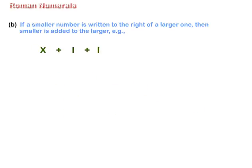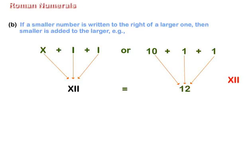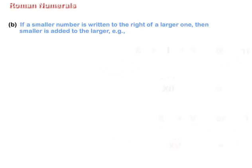X plus I plus I or 10 plus 1 plus 1 is equal to 12. In Roman, it is written as XII. X plus V or 10 plus 5 is equal to 15. In Roman, it is represented as XV.